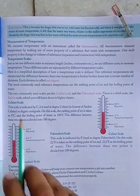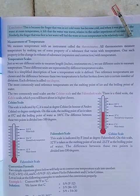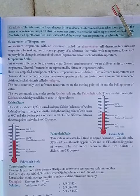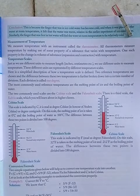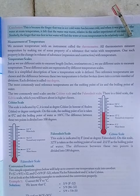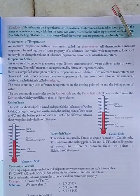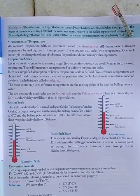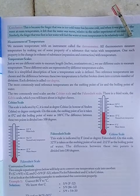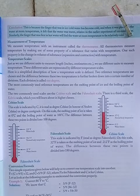Celsius Scale. This scale is indicated by °C. It is read as degree Celsius, in honor of Anders Celsius, or degree centigrade. On this scale, the melting point of ice is taken as 0 centigrade and the boiling point of water as 100 centigrade. The difference between these two points is divided into 100 degrees.